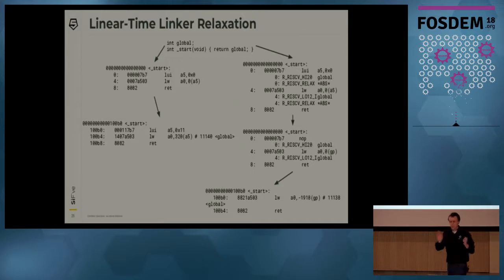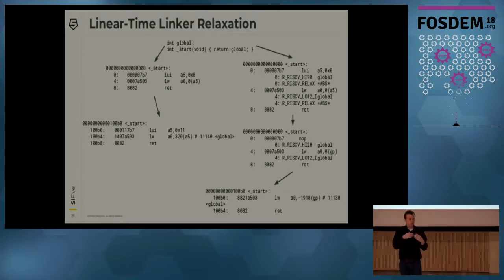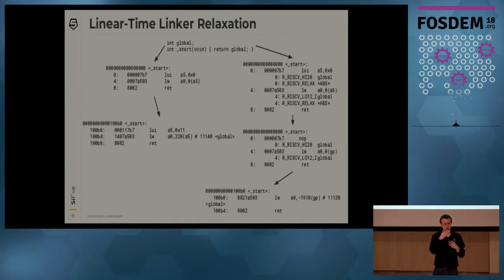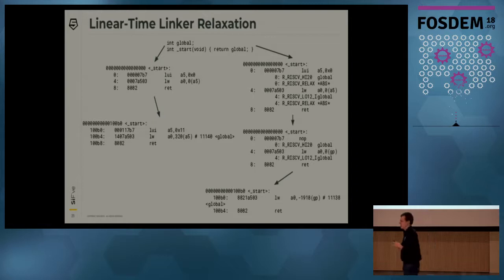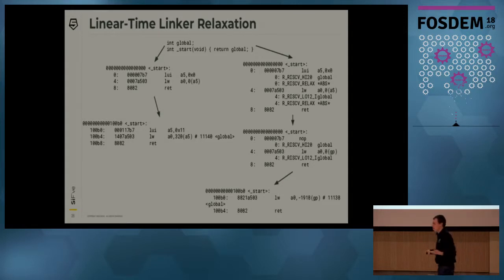The problem is that when you convert the LUI/LW pair to a single GP-relative LW, you end up with a NOP. You have to remove that NOP — otherwise you're still executing the same number of instructions. You remove it by shifting up all the code below it, and that results in quadratic-time linking for RISC-V, which can be quite slow for large objects like Linux. We have some infrastructure in binutils for linear-time linker relaxation, but haven't converted all the relaxations over. If you're interested in helping and like hacking on binutils, this would be a great place to start.